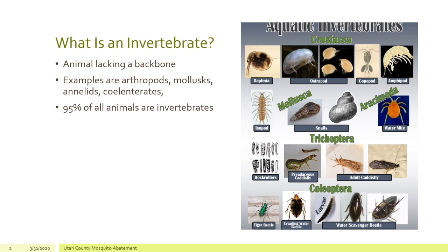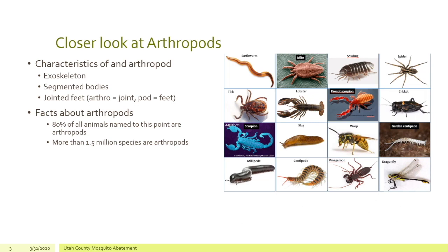We'll start with: what is an invertebrate? An invertebrate is an animal that lacks a backbone. Examples of invertebrates are arthropods, mollusks, annelids, and echinoderms. You see pictures of those over there. Mollusks are your snails. You have different types of arachnids — water mites. We'll talk about each one of these as we go through. Ninety-five percent of all the animals of the world are invertebrates.